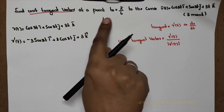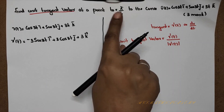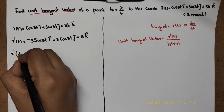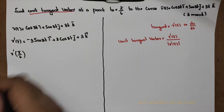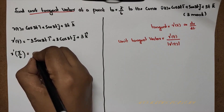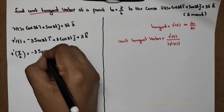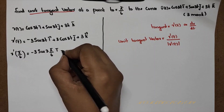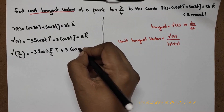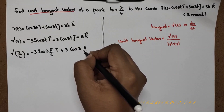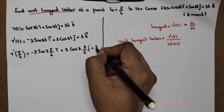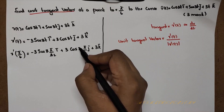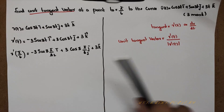The unit tangent vector at the point t₀ equal to π/6. Substituting t equal to π/6: we get -3sin(3 × π/6)·i plus 3cos(3 × π/6)·j plus 3k. Since 3 and 6 cancel, we get π/2, so we evaluate sin(π/2) and cos(π/2).